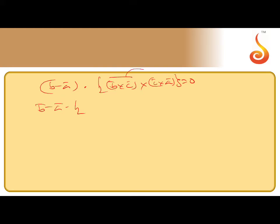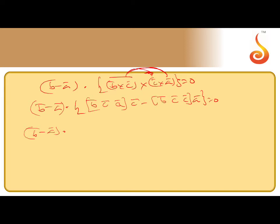We can simplify this using the product of four vectors. (b × a) × (c × a) expands as [b, c, a]·c̄ - [b, c, c]·ā. So we get (b - a) · ([b, c, a]·c̄ - [b, c, c]·ā) = 0.